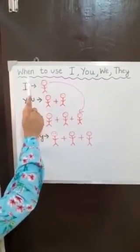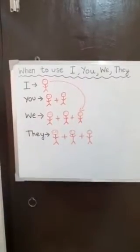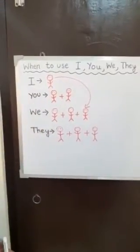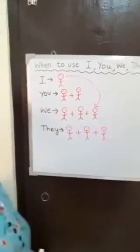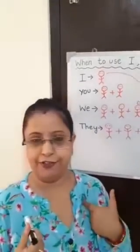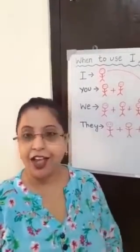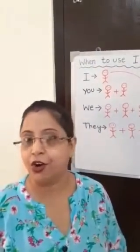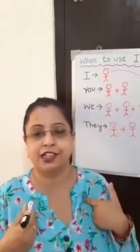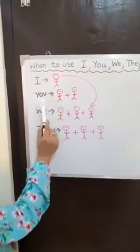I have written on the board: when to use I, you, we, and they. When do we use I? We use I when we talk about myself. Like when I say I am Ellora Shah and I am a teacher — I'm talking about myself, so we use I.